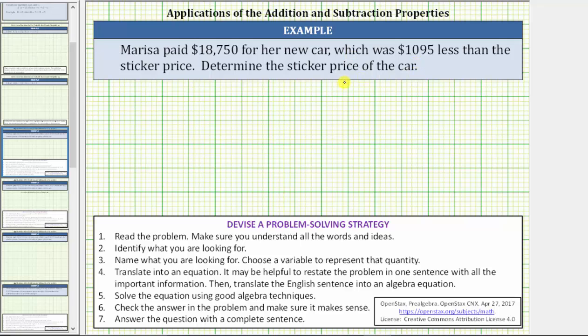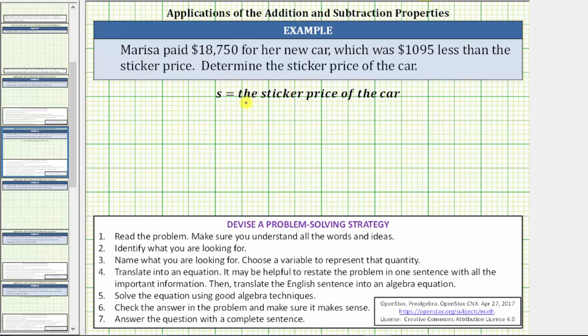So it's important to recognize that because she paid less than sticker price, the sticker price must be more than $18,750. And because we are looking for the sticker price, we need to represent this amount using a variable. Let's go ahead and use the variable S, and let S equal the sticker price of the car. And now we've already completed the first three steps of the problem-solving strategy.